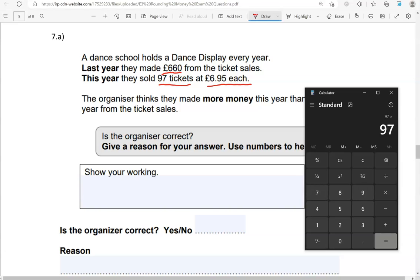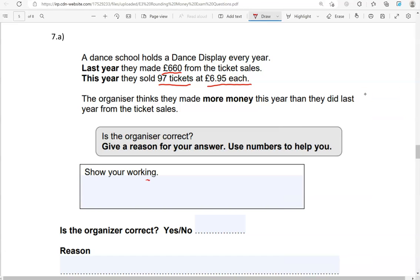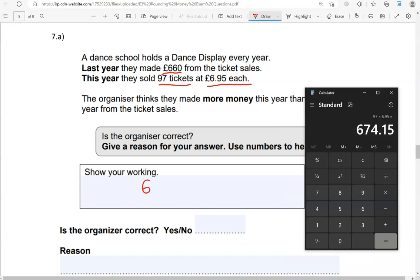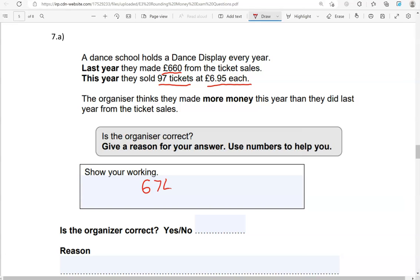So 97 times £6.95 gives us £674.15. And that, in comparison to £660 is higher. Is the organiser correct? We're going to say yes.